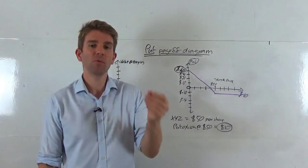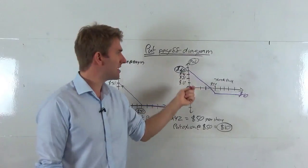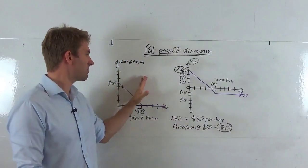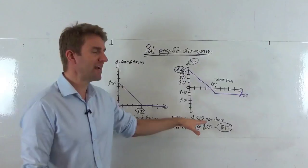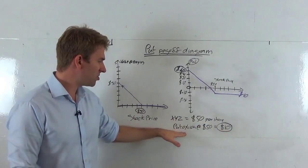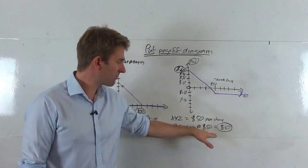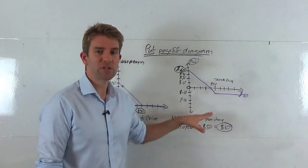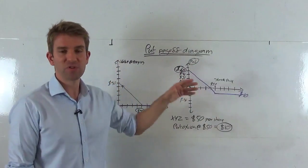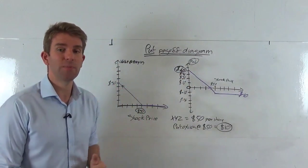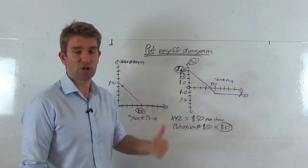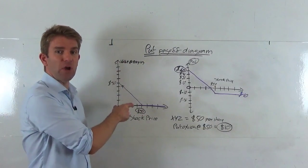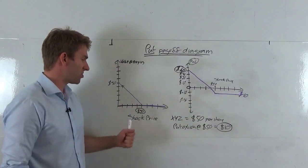Let's look at these two different payoff diagrams to see what our options contract will be worth at expiry, and the other way of looking at it — what would our P&L be at expiry — which is going to depend on the price we paid for the option. We've got XYZ stock trading at $50 a share, and we've purchased a 50 strike price put option at $10. We've got our y-axis showing the value of the option at expiry and our x-axis showing the stock price.